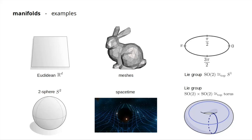You all have an intuitive understanding of what a manifold is. We already heard about topological manifolds as spaces which are locally isomorphic to Euclidean spaces. Here are some examples: the Euclidean space itself is a manifold, a sphere is a manifold, since if you look at a local patch it would look like a flat two-dimensional space. Meshes are a discrete version of two-dimensional manifolds, space-time is a manifold, and Lie groups are actually smooth manifolds.